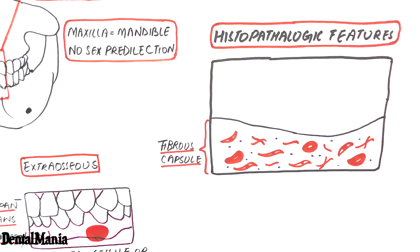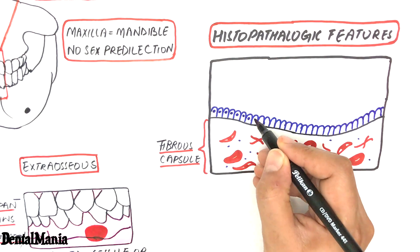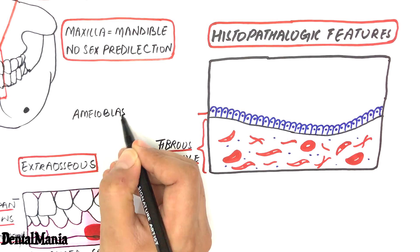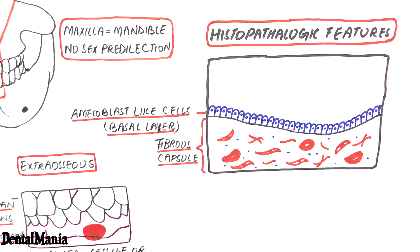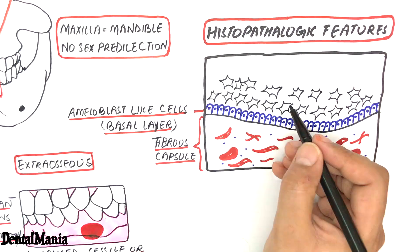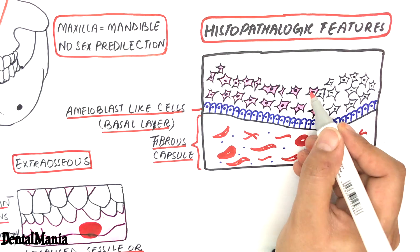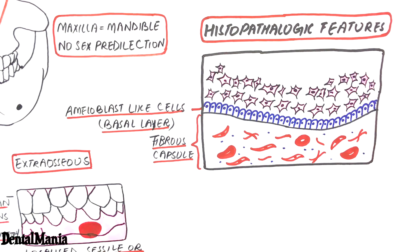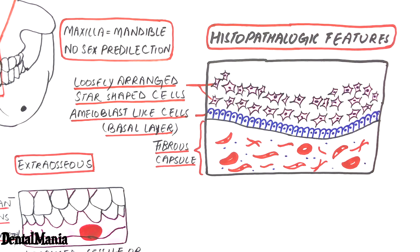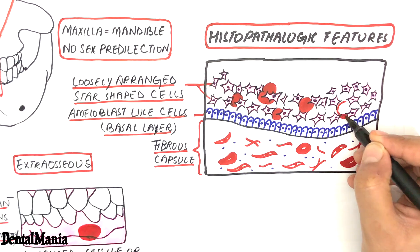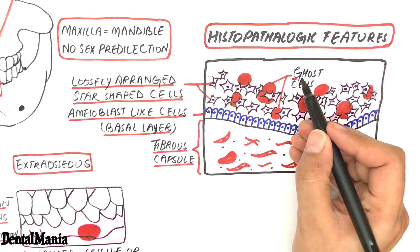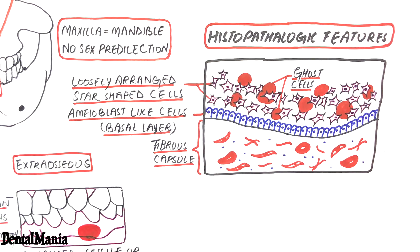The epithelial lining of the cyst is about 4 to 10 cells thick. The basal cells of the epithelium are cuboidal or columnar in shape and resemble ameloblasts or enamel-forming cells. Above this basal layer lies a layer of loosely arranged, star-shaped epithelium resembling the stellate reticulum cells of the tooth germ at the cap stage of tooth development. Within the epithelial component, a variable number of ghost cells are present, and this is the most important characteristic feature of the cyst.